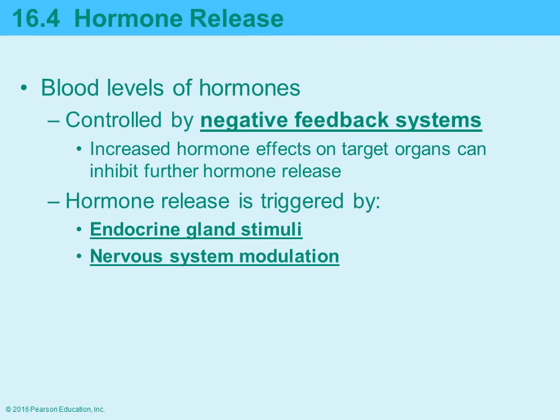The level of hormones in the blood is controlled by negative feedback systems, which produce the opposite effect. If hormone concentration in the blood gets too high, the negative feedback system signals the gland to stop secreting that hormone. If levels drop too low, the negative feedback system triggers increased secretion. It's always the opposite effect.